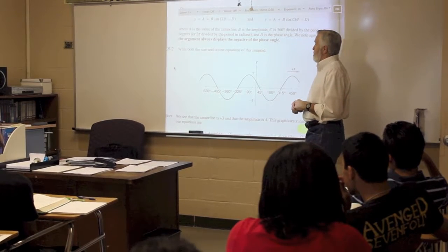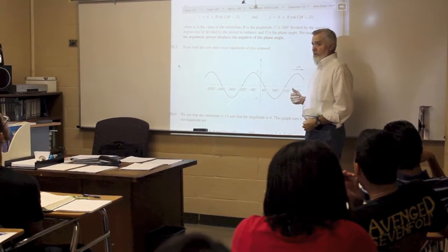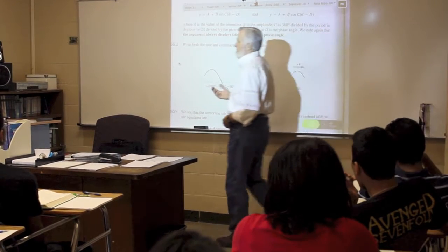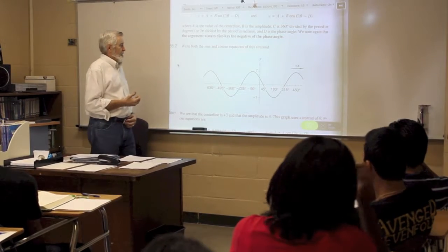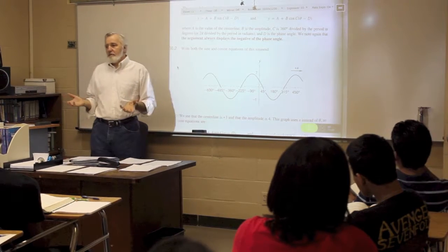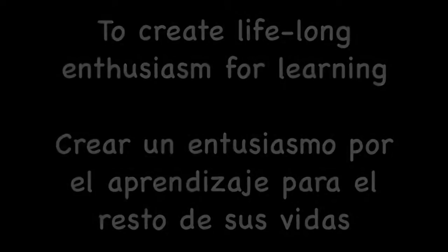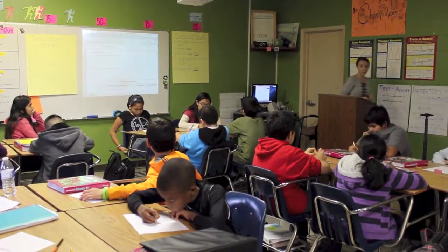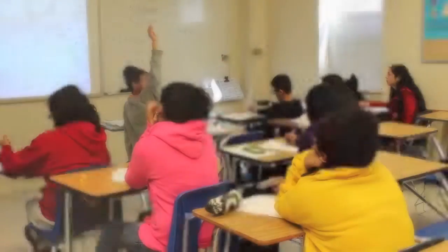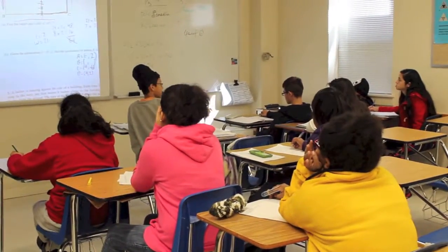You see right at the top of the board, you have two different equations — it's actually the same thing, one's just in terms of cos and the other's in terms of sine. What you need to know is what the letters stand for. The capital A — what part of the graph does that apply to? The center line. And then capital B — what does that refer to? The amplitude. What is the amplitude? How high and how low it goes above the center line.